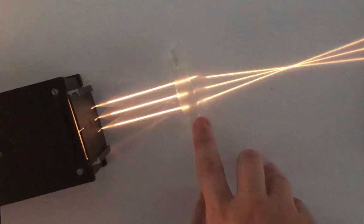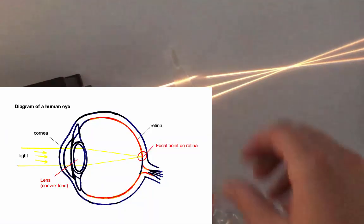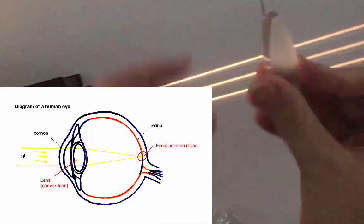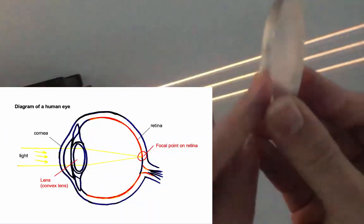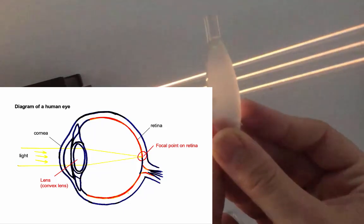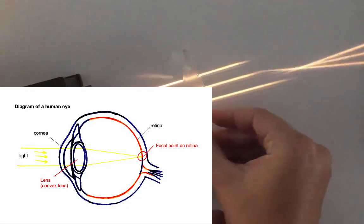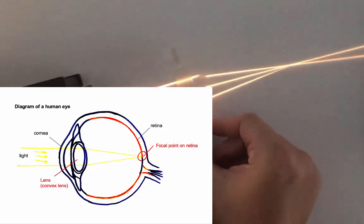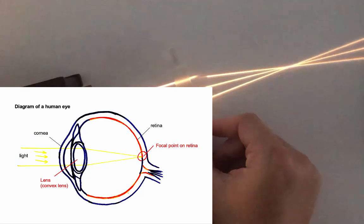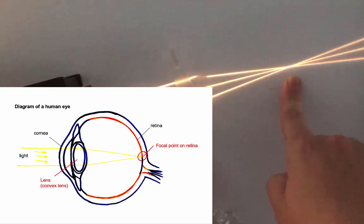This is also how your eyes work. You'd notice the front of your eye is curved like a convex lens. What that does is focus the light towards the back of your eye so that you can see images clearly.